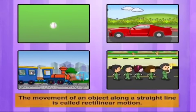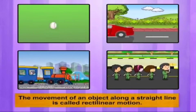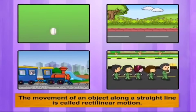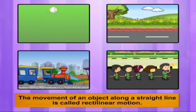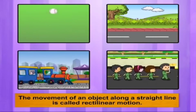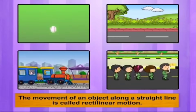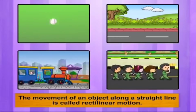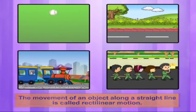Such a motion where an object moves along a straight line is called rectilinear motion.